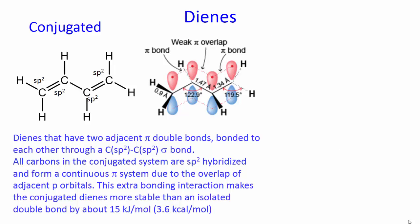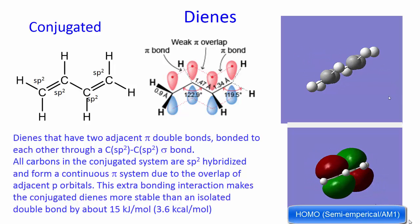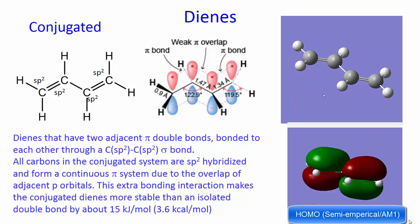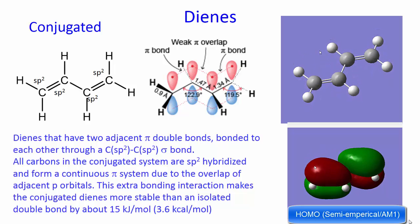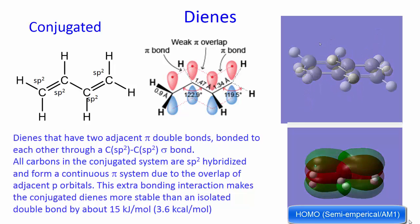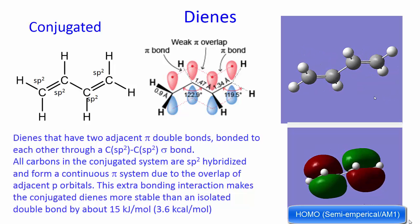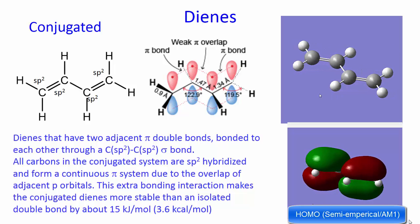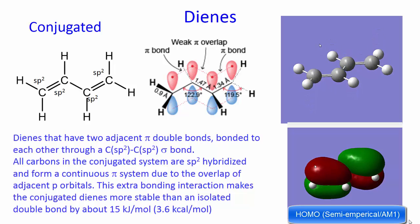Conjugated dienes are dienes that have two adjacent pi bonds bonded to each other through a carbon Sp2-Sp2 sigma bond. All carbons in the conjugated system are Sp2-hybridized and form a continuous pi system due to the overlap of the adjacent p-orbitals. This extra bonding interaction makes the conjugated diene more stable than an isolated double bond by about 15 kilojoules per mole.